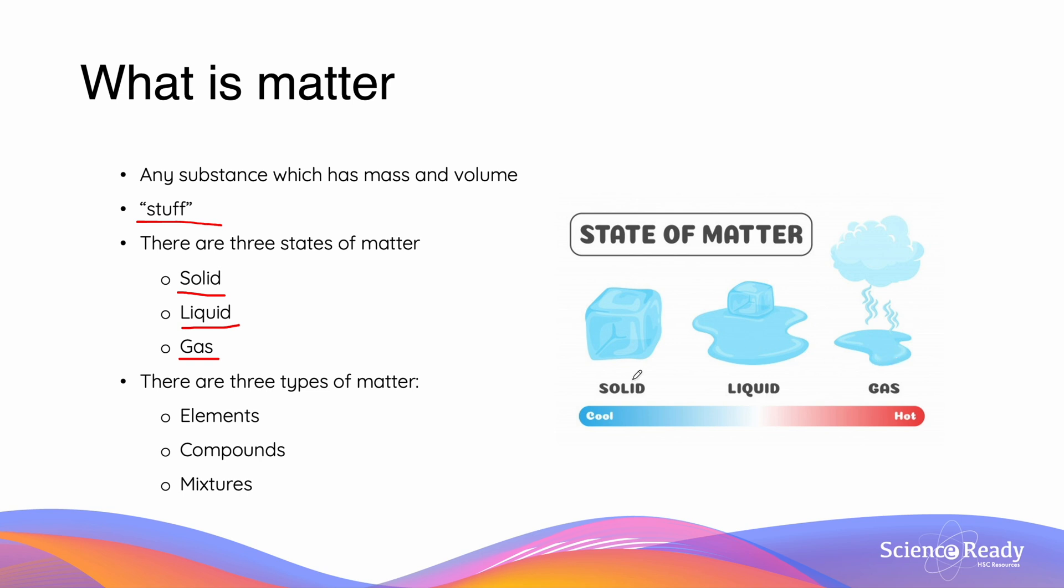That being said, there are also three different types of matter, which we will delve into in more detail. First of which is an element, the next one are compounds, and finally we have mixtures.